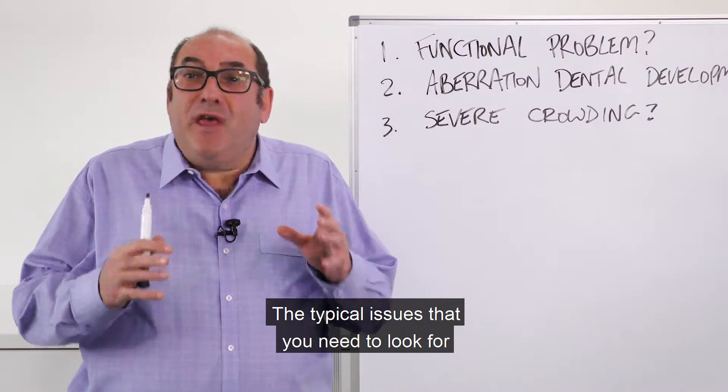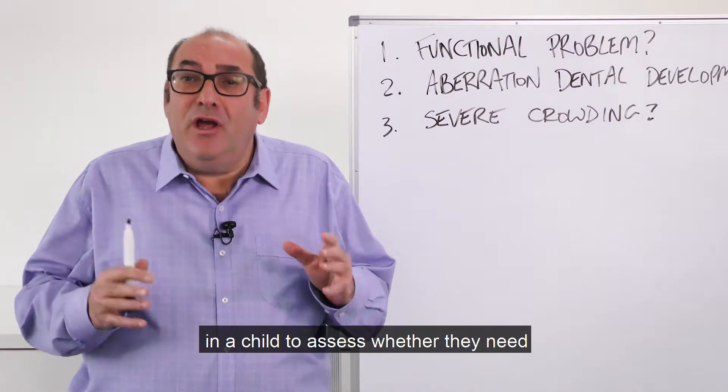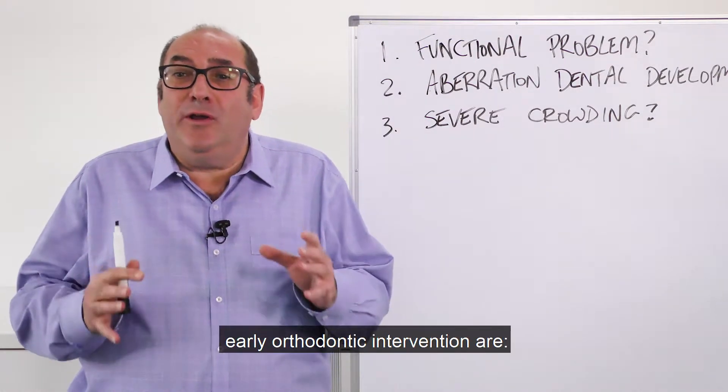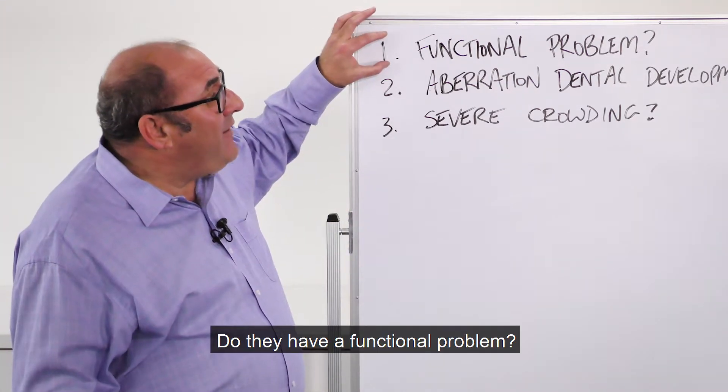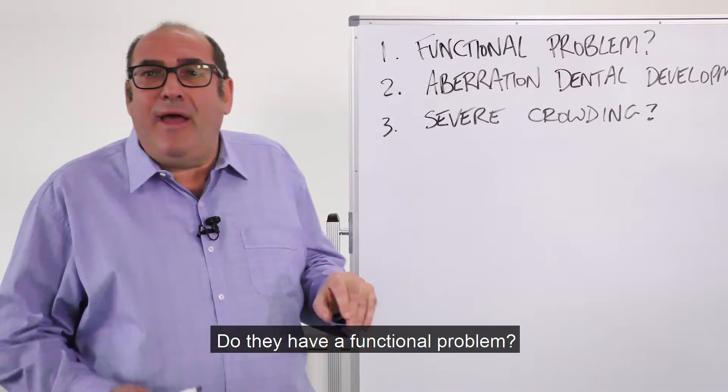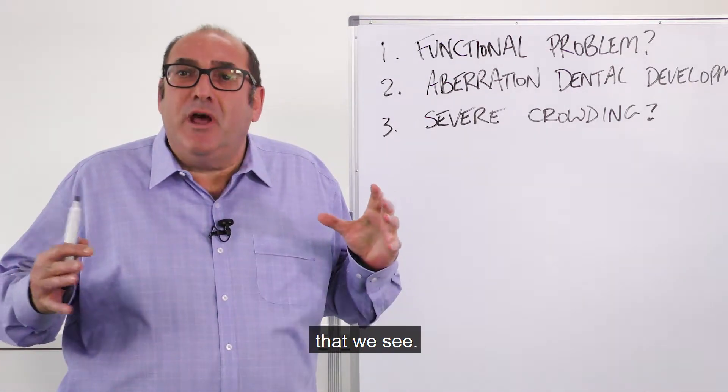The typical issues that you need to look for in a child to assess whether they need early orthodontic intervention are, do they have a functional problem? And there are many different functional problems that we see.